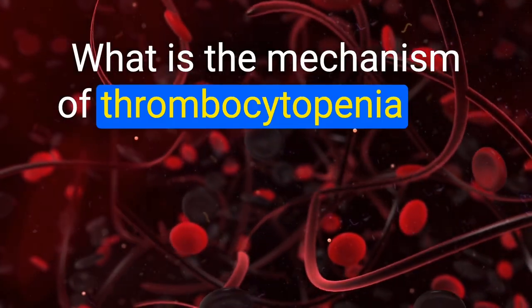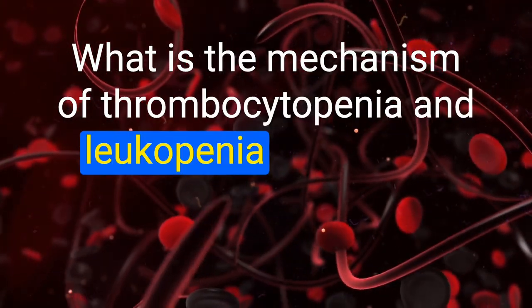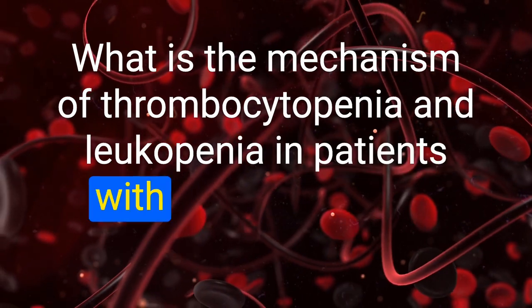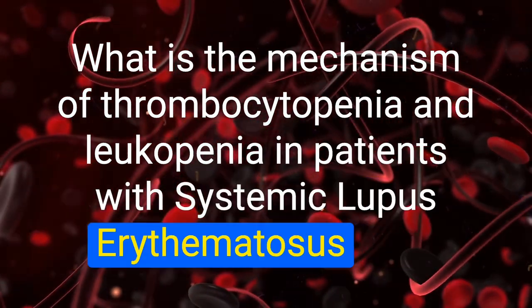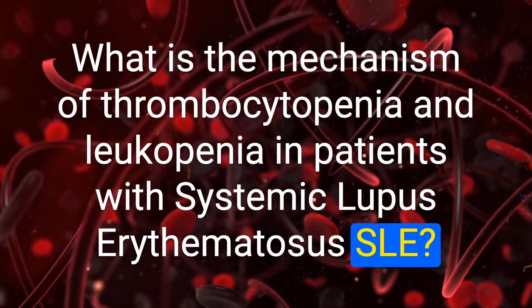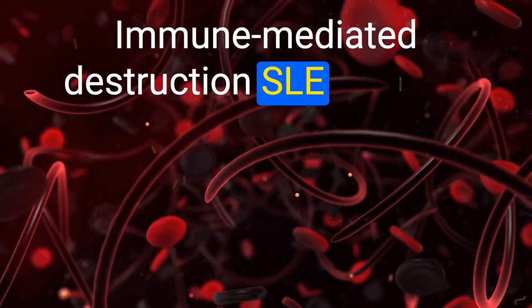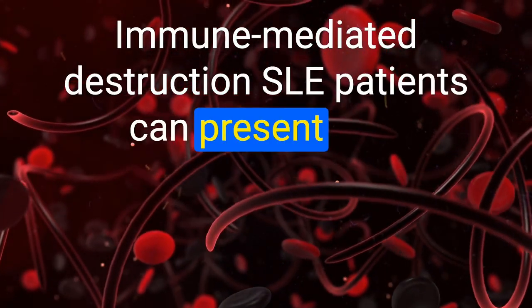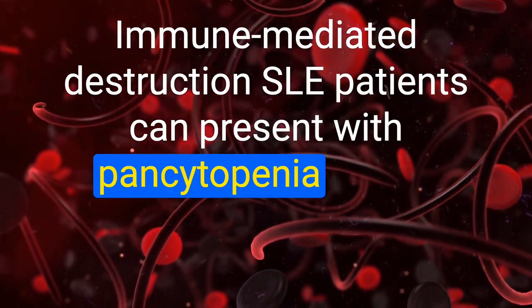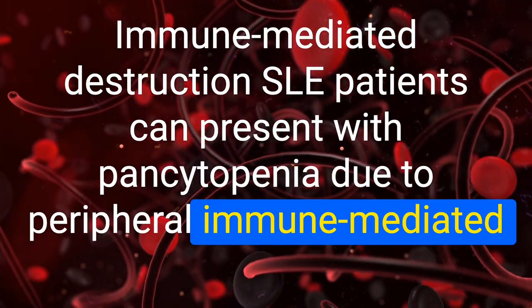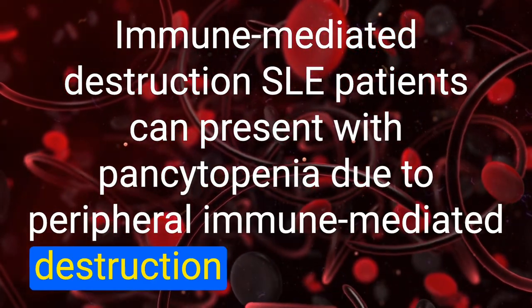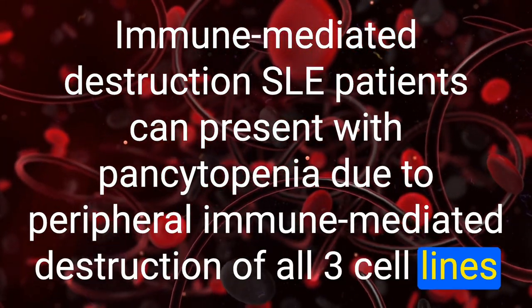What is the mechanism of thrombocytopenia and leukopenia in patients with SLE? Immune-mediated destruction — SLE patients can present with pancytopenia due to peripheral immune-mediated destruction of all three cell lines.